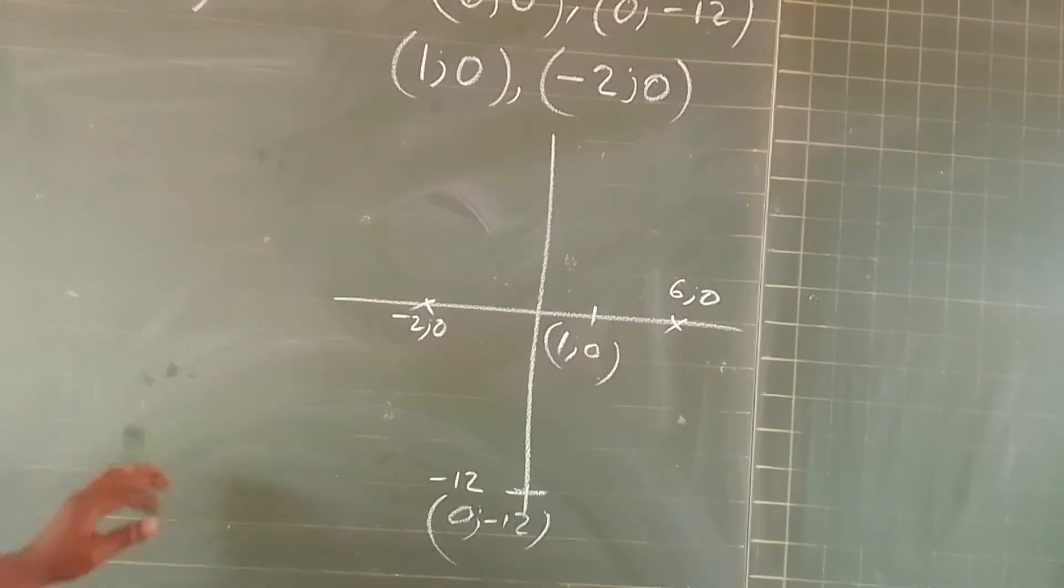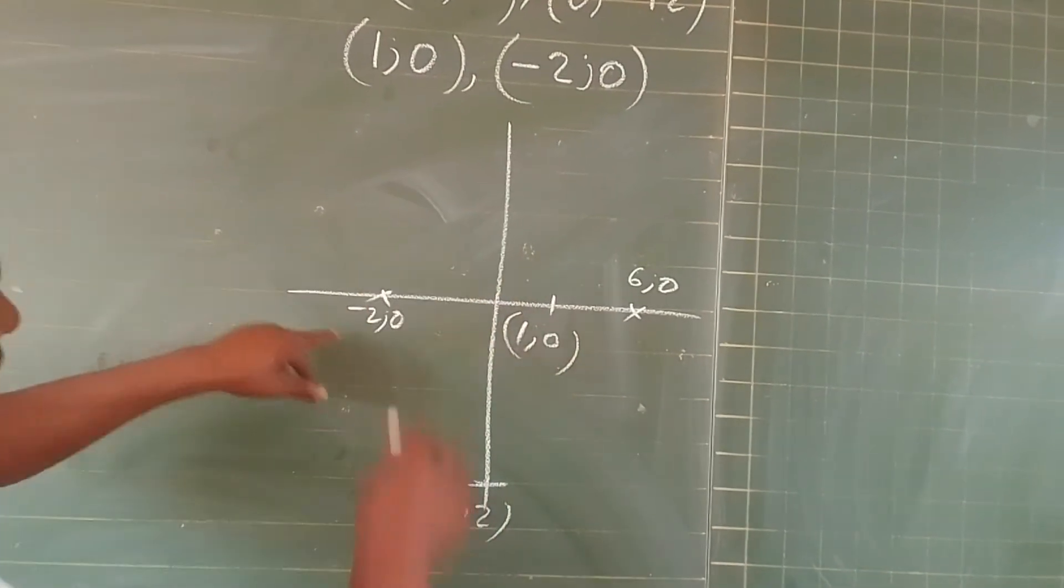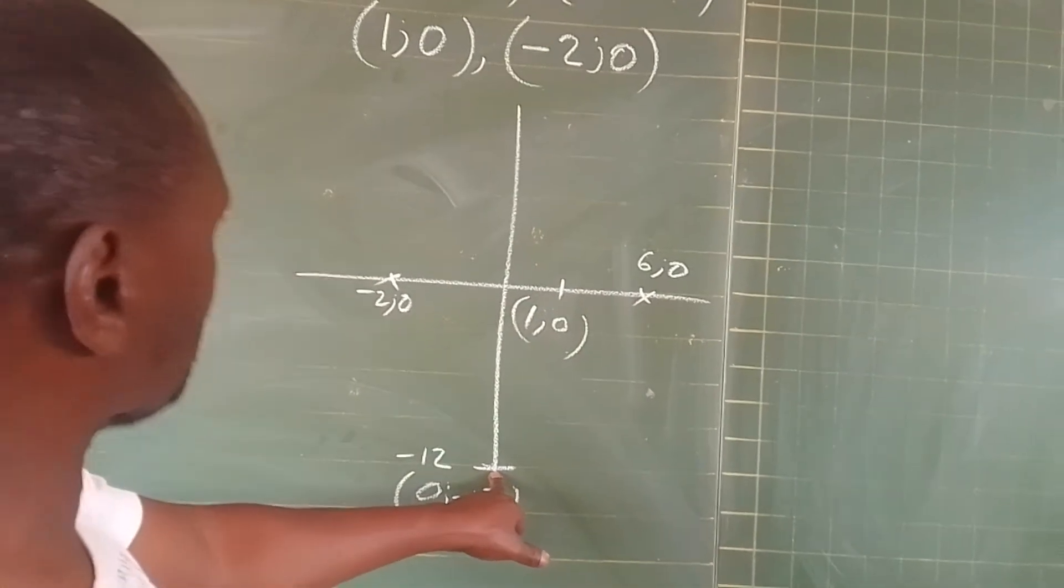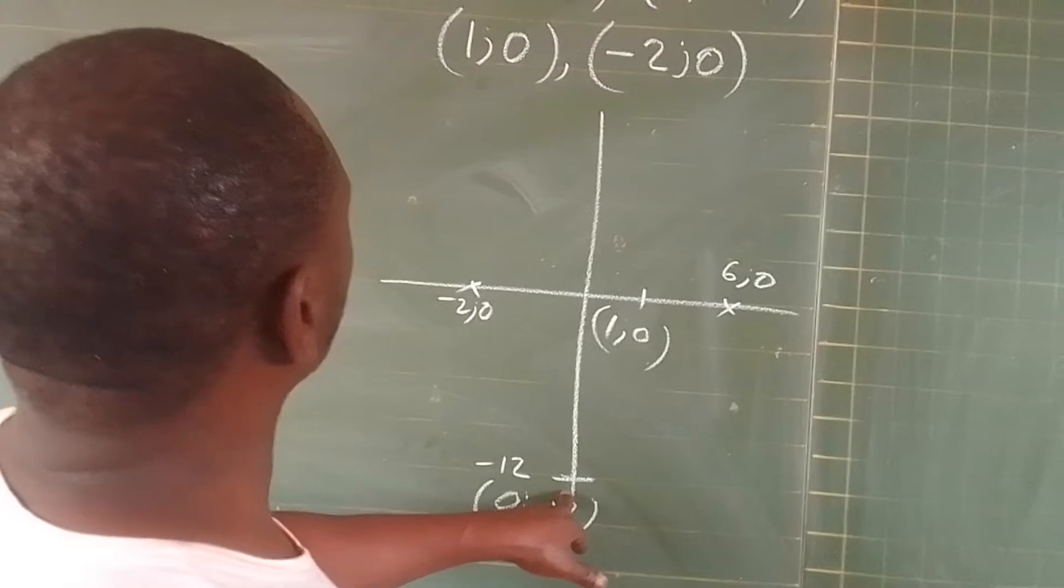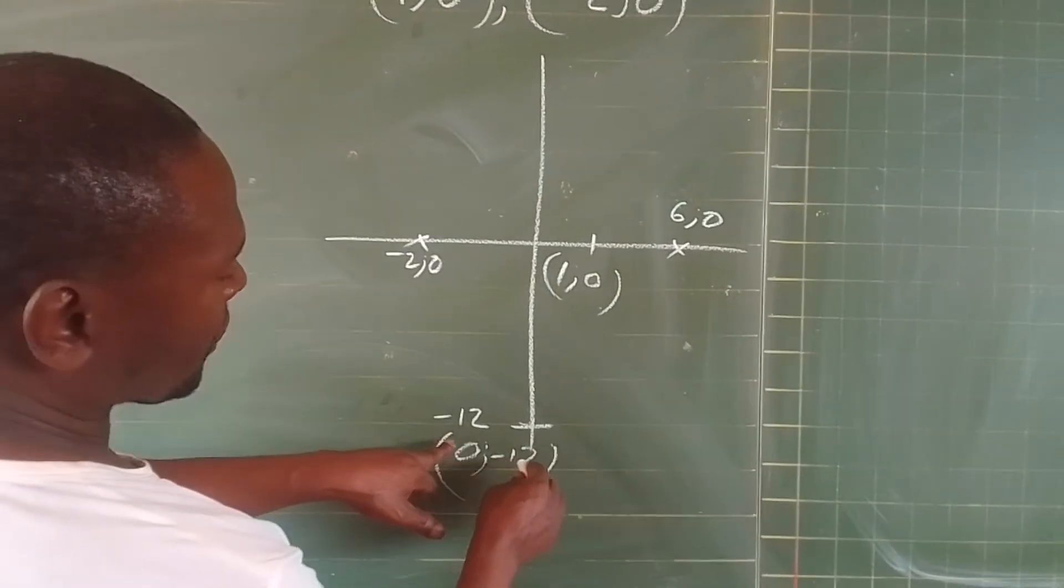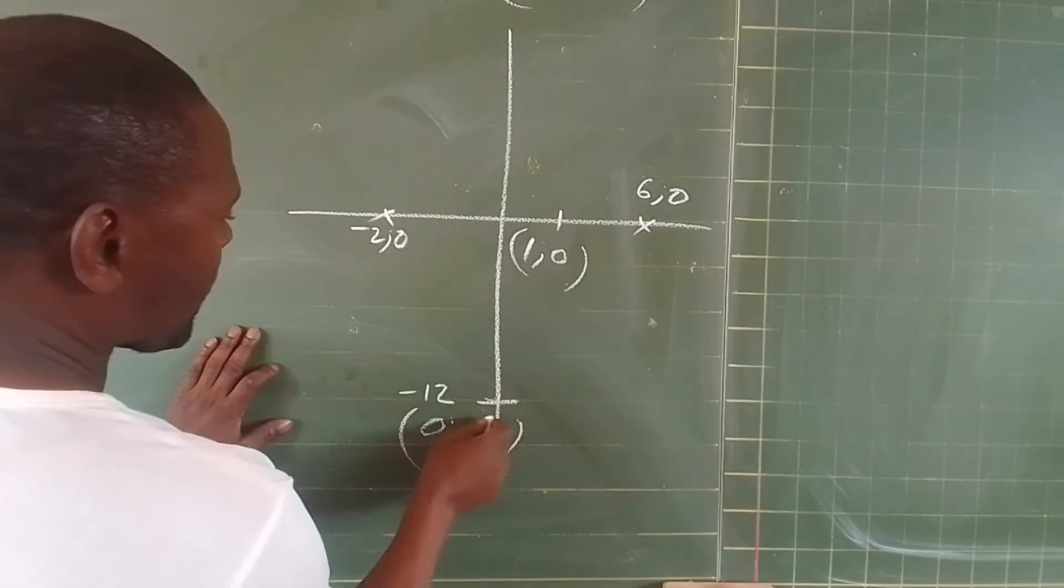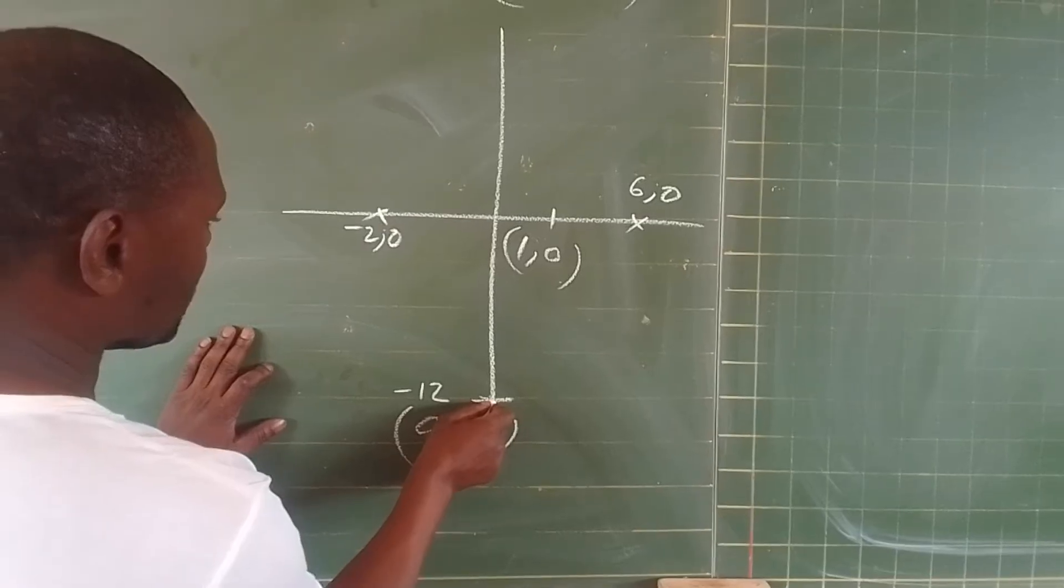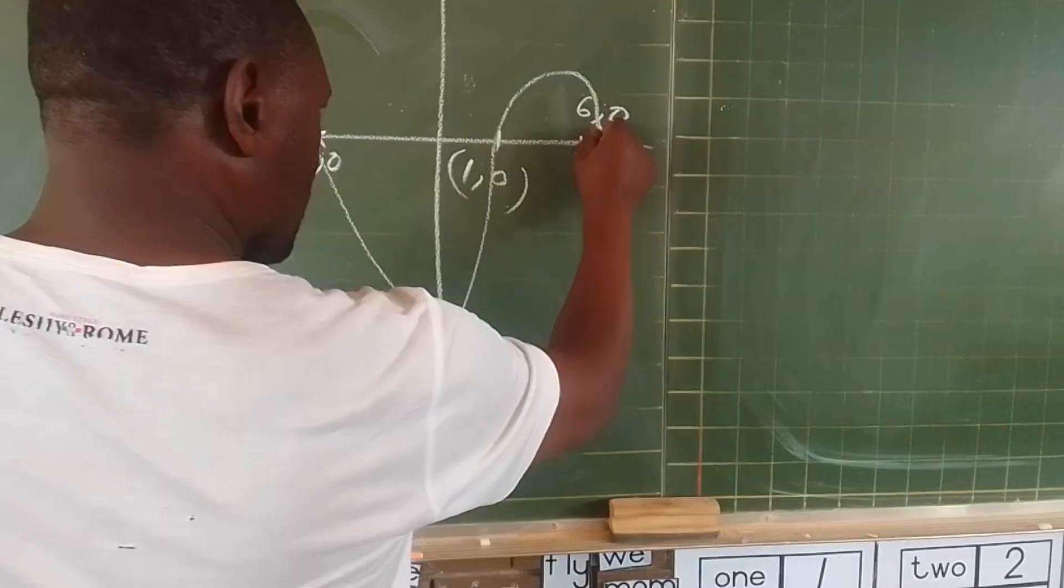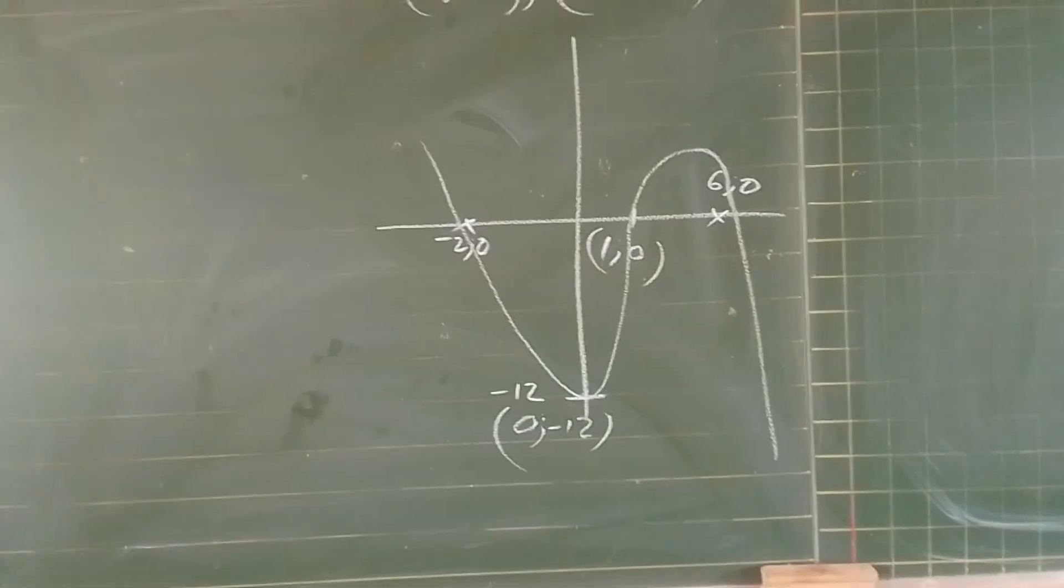Your graph is going to go like this. Here is the y-intercept, your turning point rather. It turns here, it comes here, something like this. Your graph is going to be like that in nature.